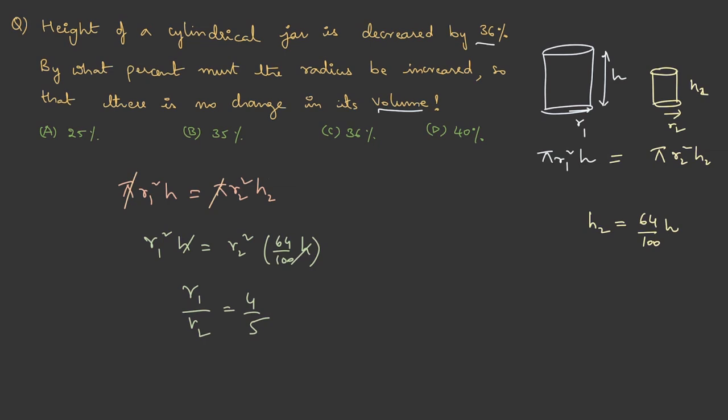Now, we don't need the ratio. We need the percentage change. Percentage change in the radius is r2 minus r1 by r1 into 100. Because we know the ratio we can safely assume r1 to be 4x, r2 to be 5x. If I substitute these values this is 5x minus 4x by 4x into 100. That is 1 by 4x into 100 which is 25 percent.